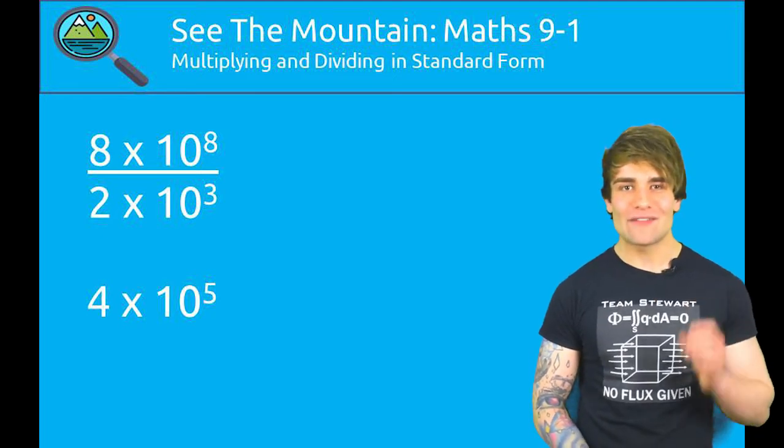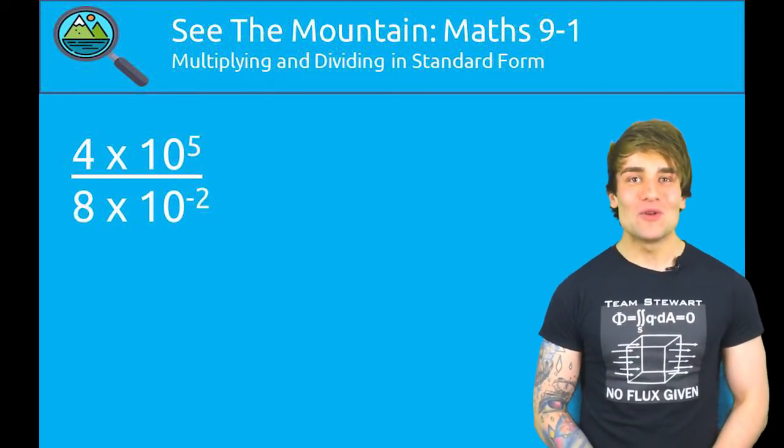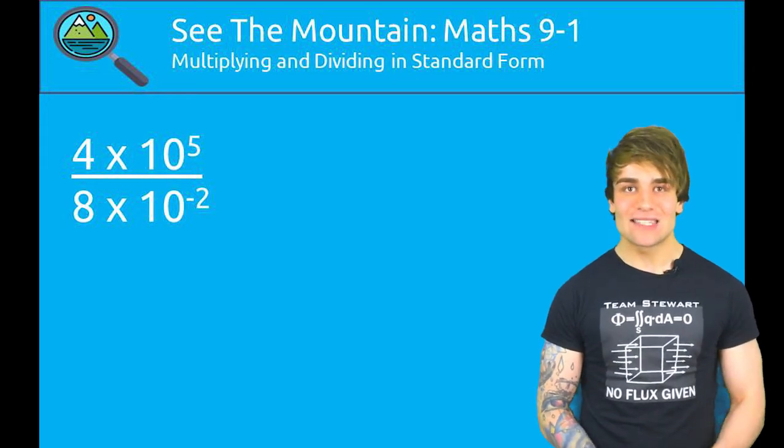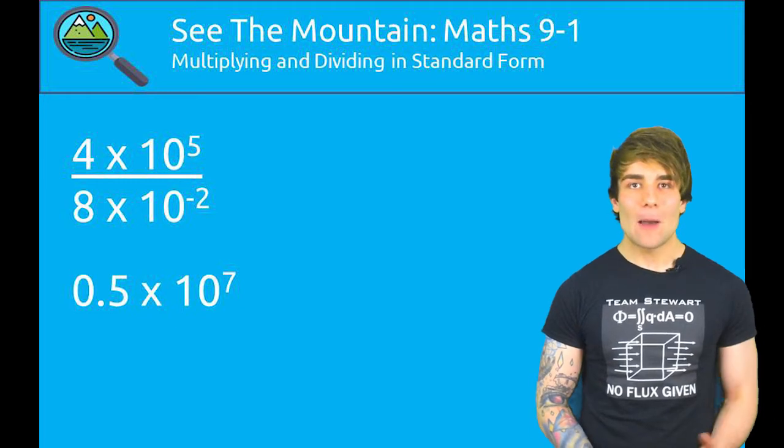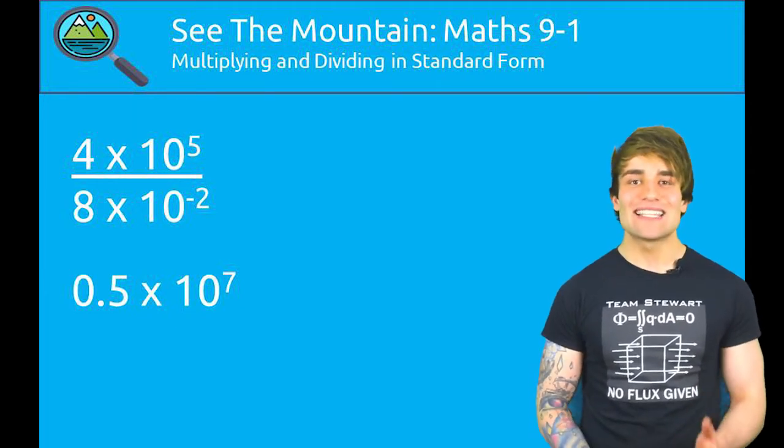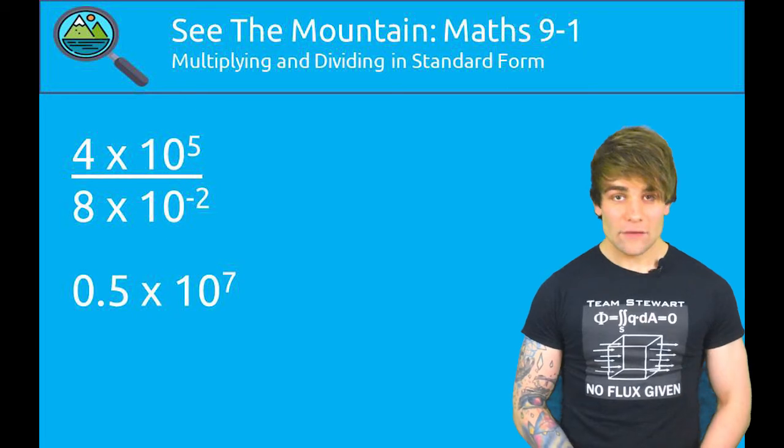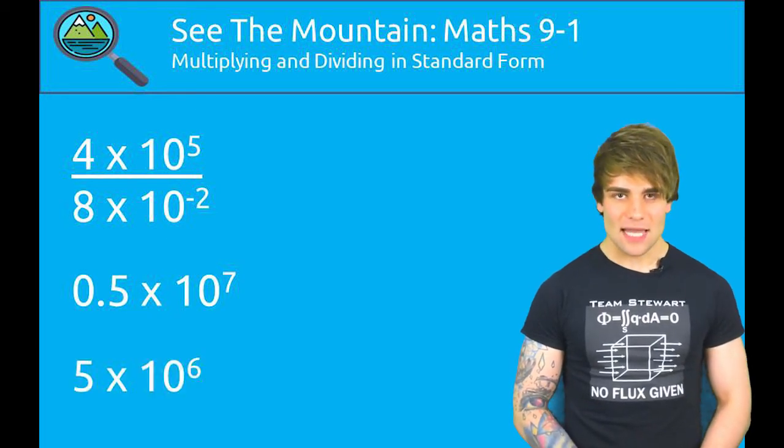Let's try one more to make sure we've definitely got it. Hopefully you found that 0.5 times 10 to the 7 was our solution because 4 divided by 8 is 0.5. And 5 minus, a minus number takes us to 7. Giving us a final answer of 5 times 10 to the 6.